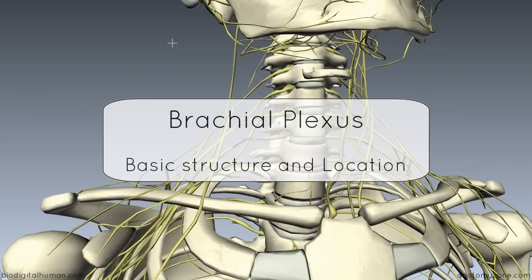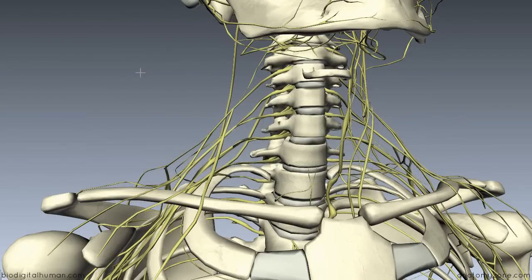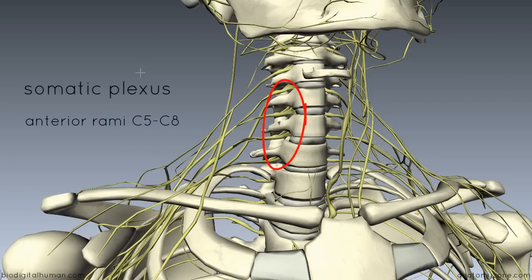This is a tutorial on the brachial plexus. The brachial plexus is a somatic plexus formed by the anterior rami of C5 to C8 and most of the anterior rami of T1.